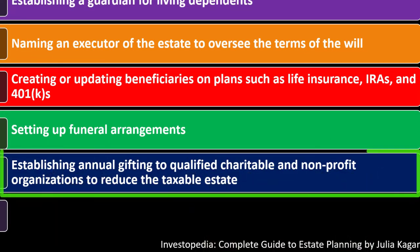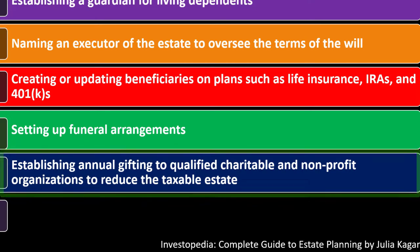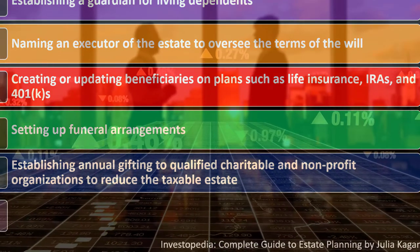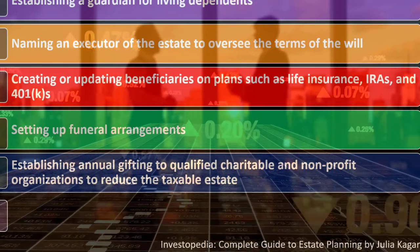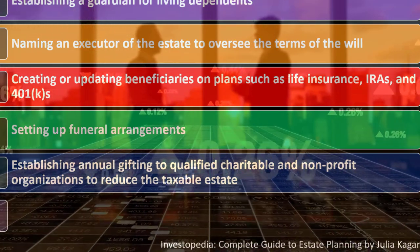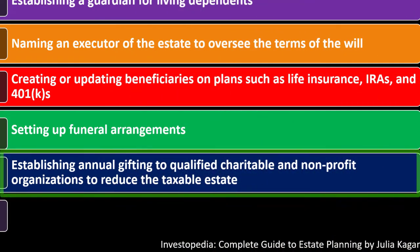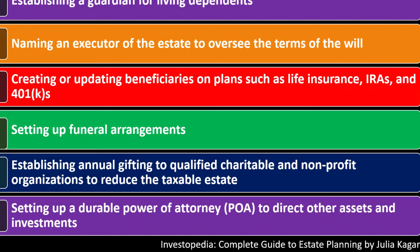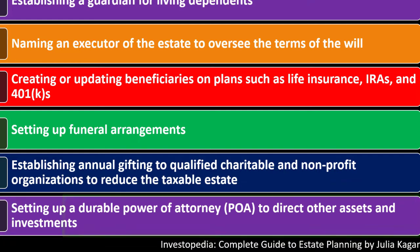Establishing annual gifting to qualified charitable and nonprofit organizations can reduce your taxable estate. If you have a fairly large asset base, one way to reduce it is through charitable donations — a good charity is probably more efficiently using money than the government. Setting up a durable power of attorney (POA) to direct other assets and investments is also key.